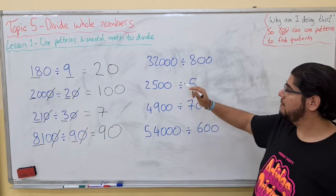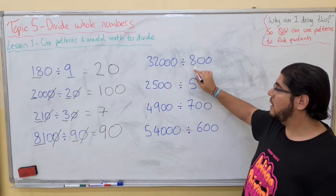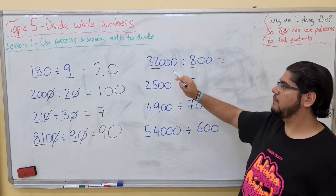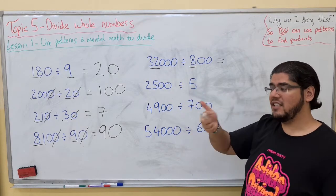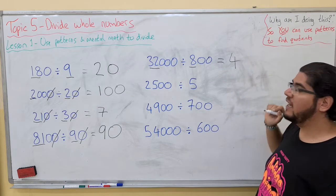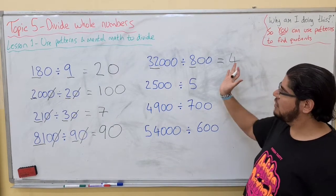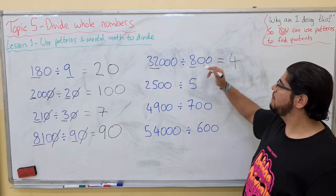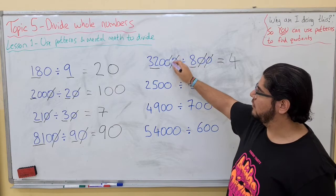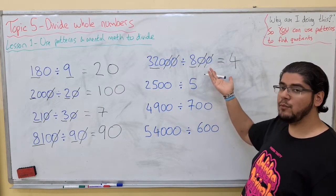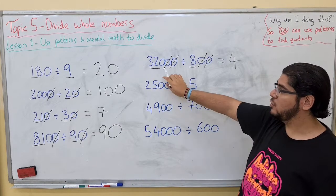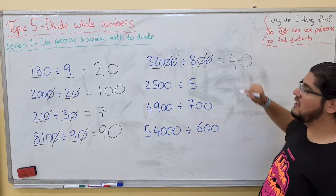Let's take a look at the next part. 32 divided by 8 — only this part. 8, 16, 24, 32 — so 32 divided by 8 is 4. Now let's cross zeros from both sides. Cross one from here and one from here, one from here and one from here. Do I have any more zeros I can cross from both sides at the same time? No. So there's one zero left — add it to the answer.